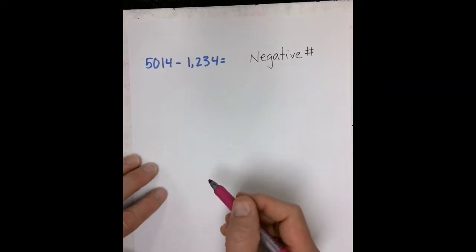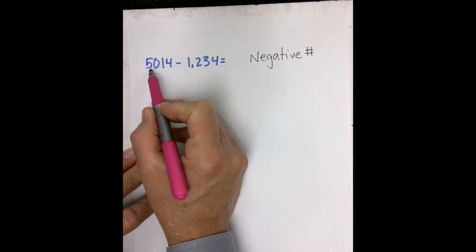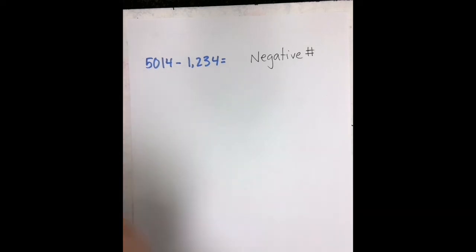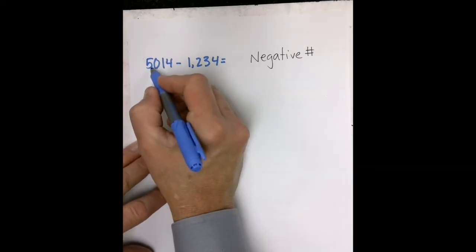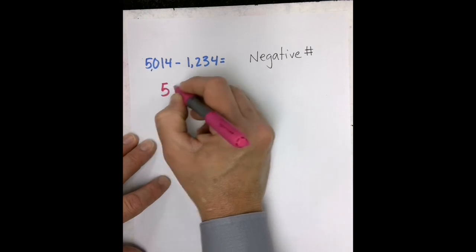One of the nice things about the negative number strategy is that you don't have to worry about regrouping over a 0, like you would in this problem, where we have 5,014 minus 1,234. Let's see what it looks like.